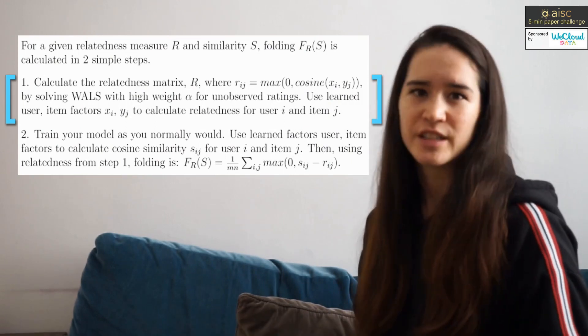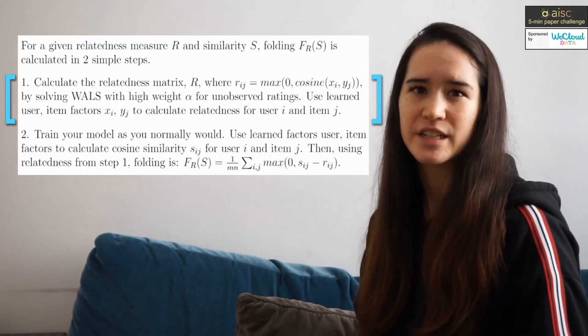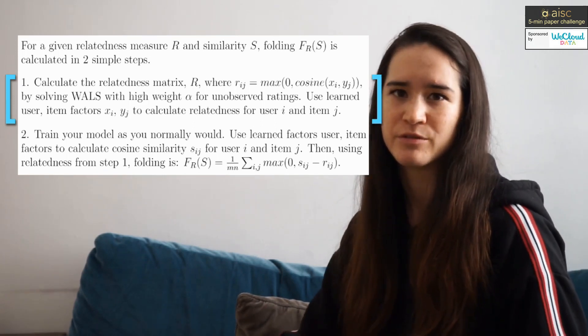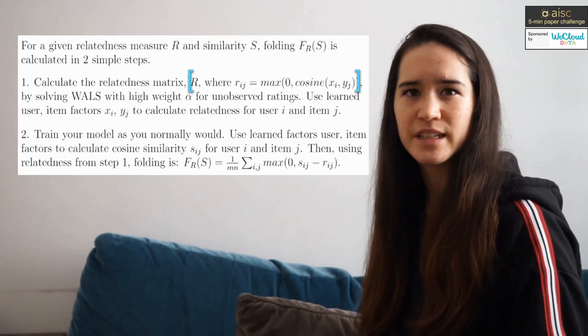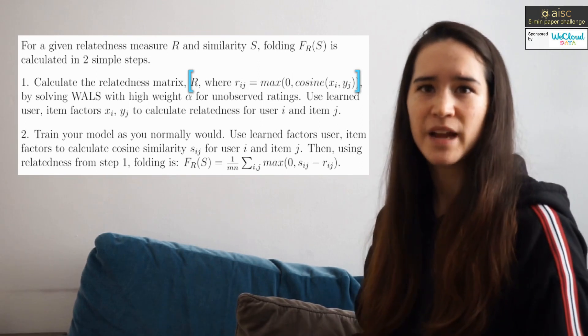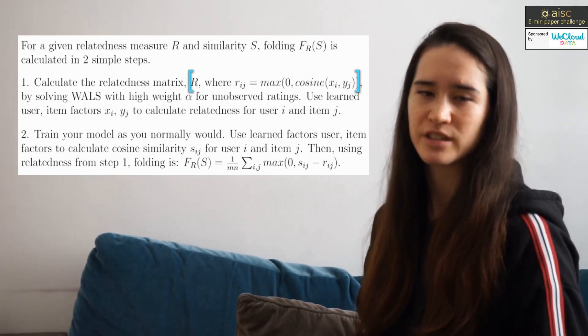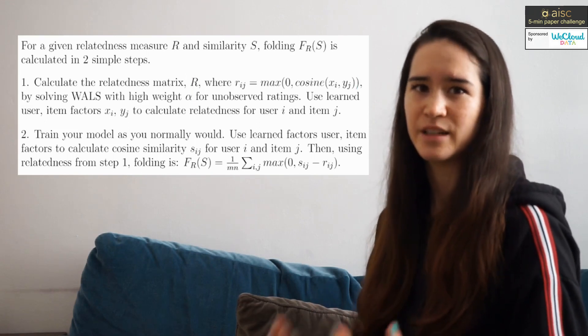So first, calculate relatedness. And this is done by solving weighted alternating least squares with a high weight alpha for unobserved ratings. And the relatedness matrix R for all user-item pairs can be defined with entry ij as the max of zero and the cosine similarity between user i and item j.